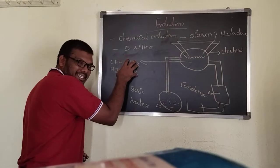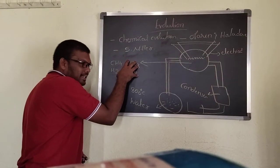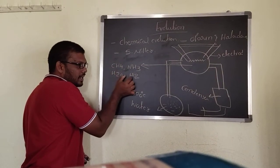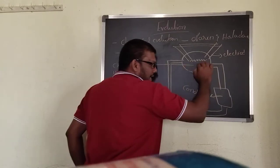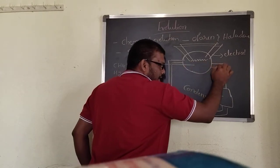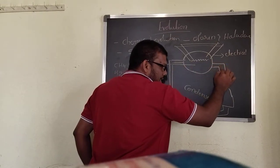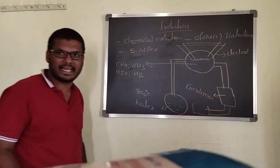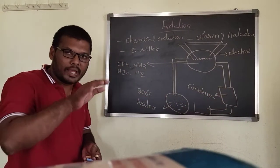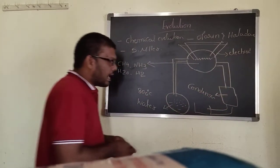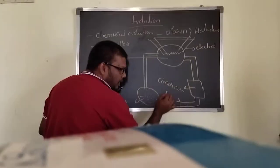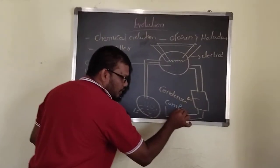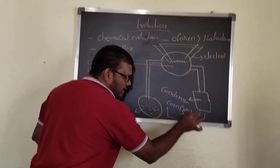Here the mixture contains methane, ammonia, water, and hydrogen. Then the mixture enters here, and here the condenser is there. The condenser works like a cooling chamber. And finally in the collector you can get the compounds.